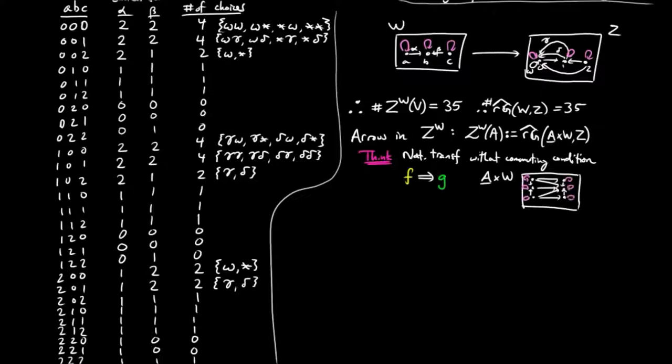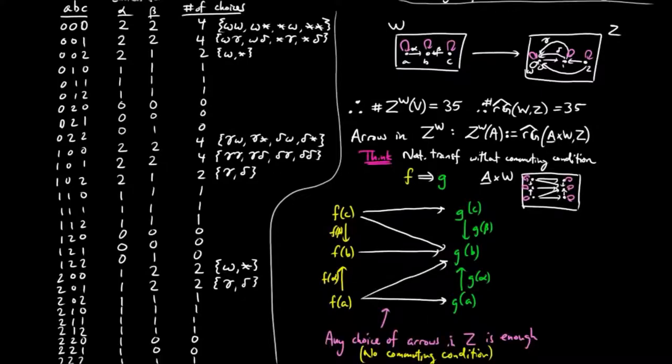We make a copy of underline A cross W where the morphism F is given in the left column and G in the right column.